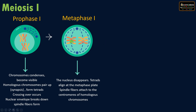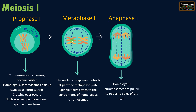The next phase is metaphase one. During metaphase one, the nucleus disappears and the tetrads, or homologous chromosomes, align at the center — the metaphase plate. Spindle fibers attach to the centromeres of the homologous chromosomes. The next phase is anaphase one, during which homologous chromosomes are pulled to the opposite poles of the cell by the activity of the spindle fibers.